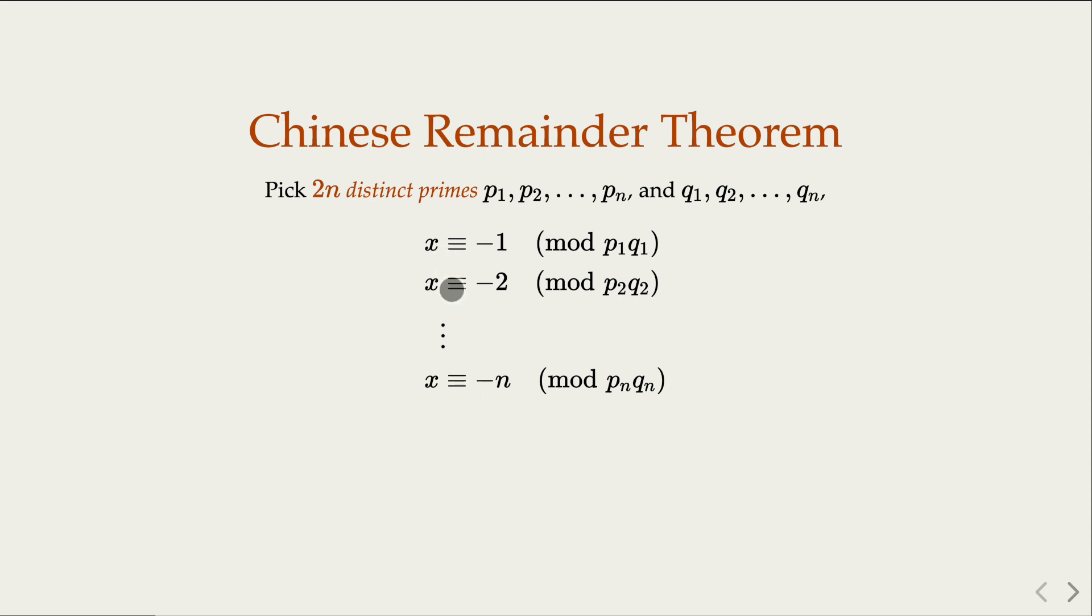So in other words, x plus 1, x plus 2, up to x plus n, we have found n consecutive integers, and each contains two distinct prime factors. That is, they cannot be a prime power.